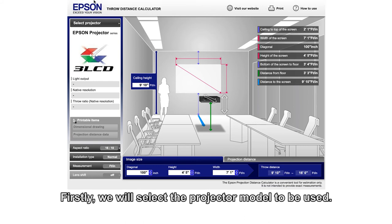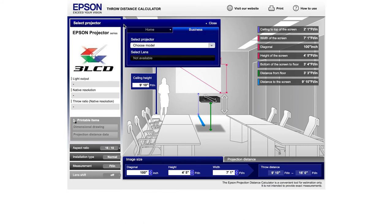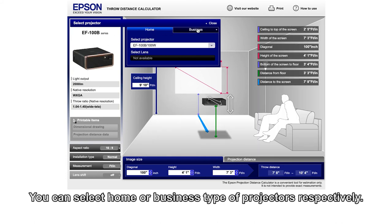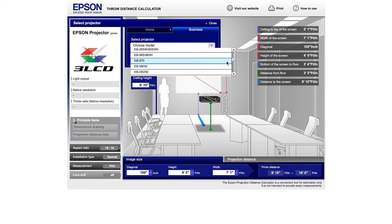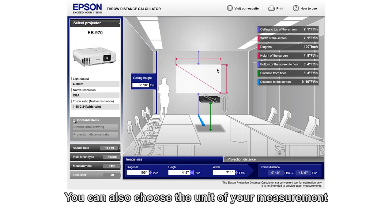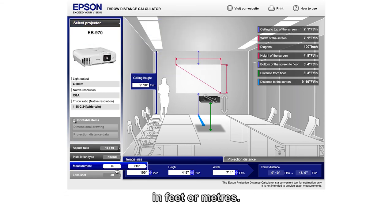Firstly, we will select the projector model to be used. You can select home or business type of projectors respectively. You can also choose the unit of your measurement in feet or meters.